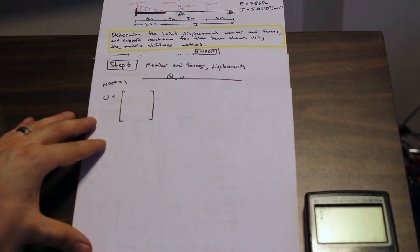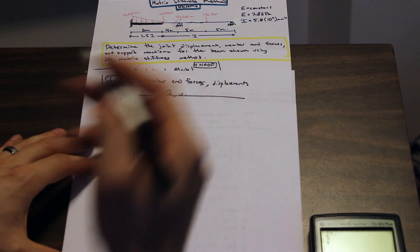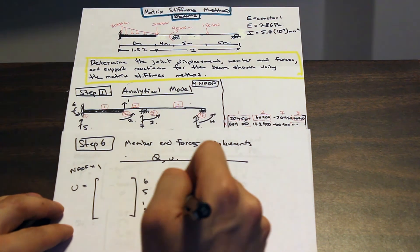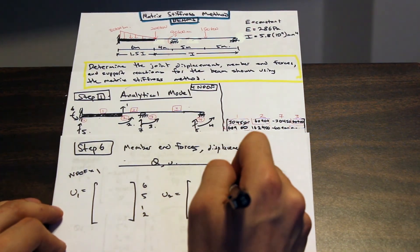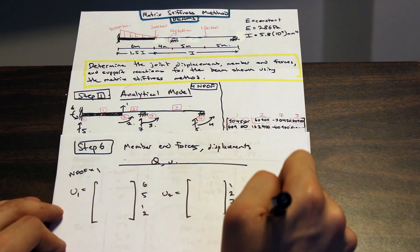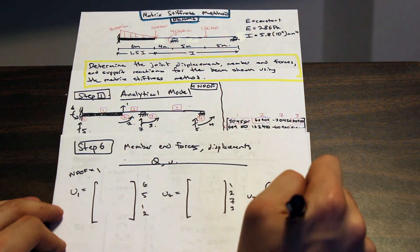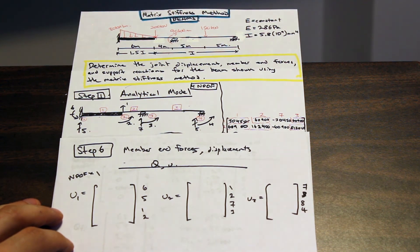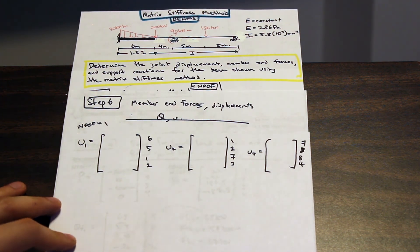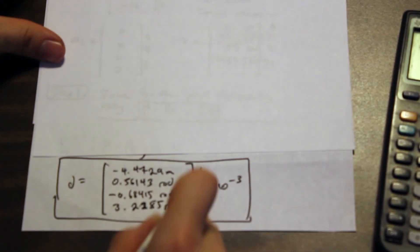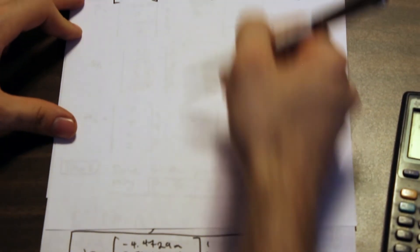Each u vector is a four-by-one vector, numbered according to the analytical model. For u1 the code numbers are 6, 5, 1, 2. For u2 they are 1, 2, 7, 3. For u3 they are 7, 3, 8, 4. Just as we transferred k into S before, we now transfer D into each u by matching code numbers.